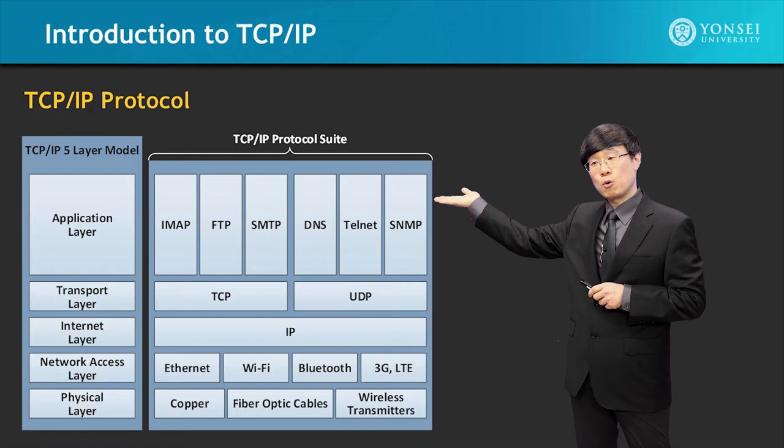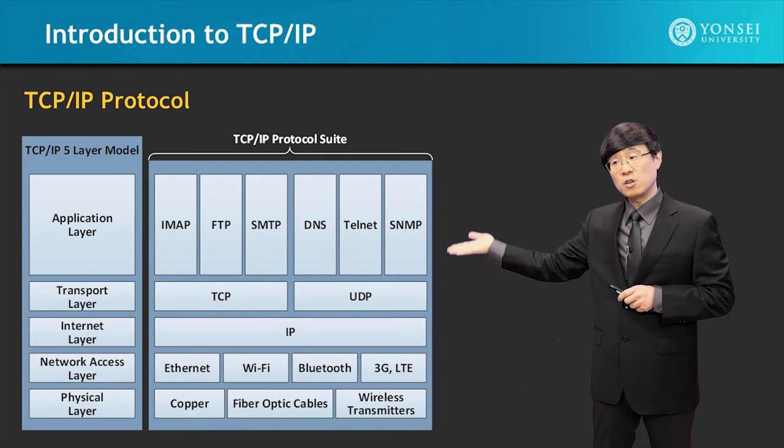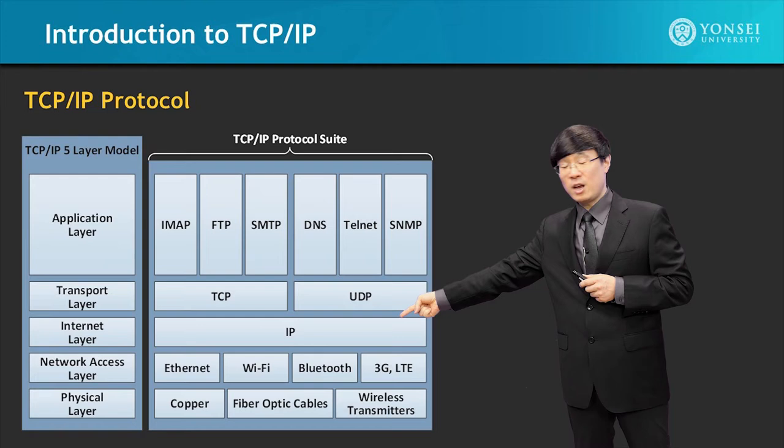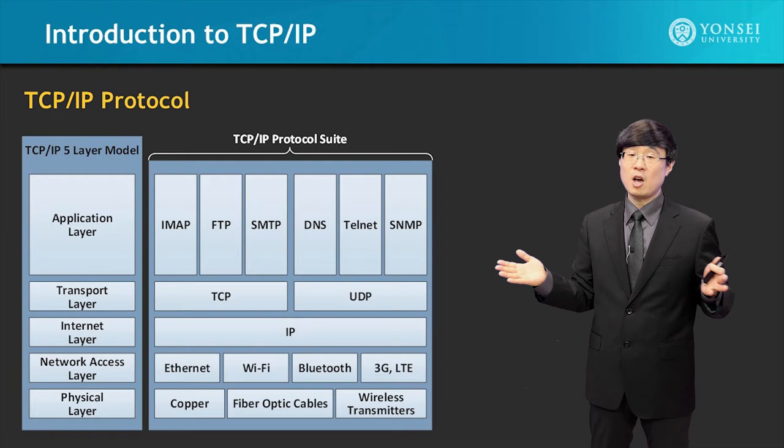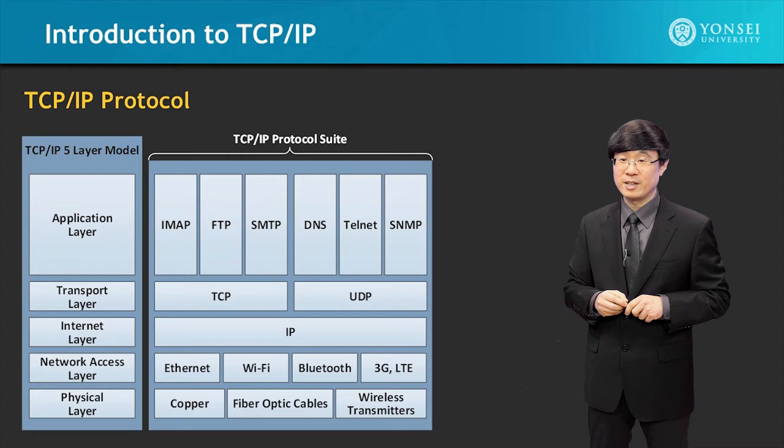The TCP/IP protocol structure 5-layer model is shown here, and corresponding to each layer, these are the protocols and their functions. As you can see, Ethernet, Wi-Fi, Bluetooth, and 3G as well as 4G LTE communications — these are the options that we've always been using. So it's time to learn how this all works together.